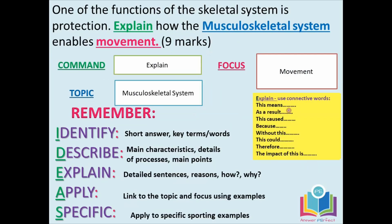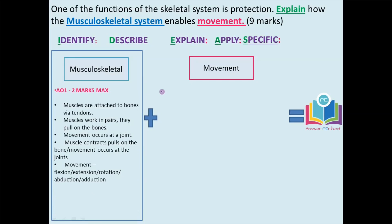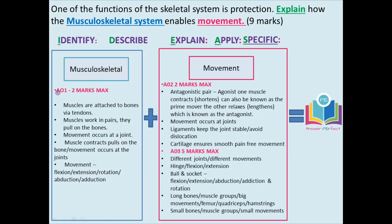Let's break the question down. The command word is 'explain' and we'll need to use connective words. The focus is movement and the topic is the musculoskeletal system. It's worth nine marks. AO1 is worth two marks — this is where you identify and introduce the topic: muscles are attached to bones via tendons, muscles work in pairs, all movement occurs at a joint, muscles contract and pull on the bone, and you identify the types of movement — flexion, extension, rotation, abduction, and adduction.